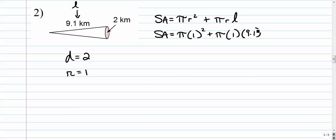So we go surface area equals pi times the radius squared plus pi times 1 times 9.1.